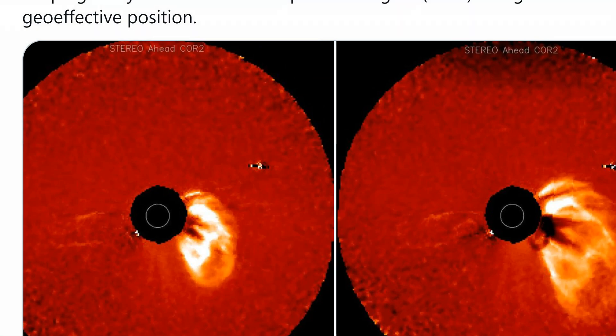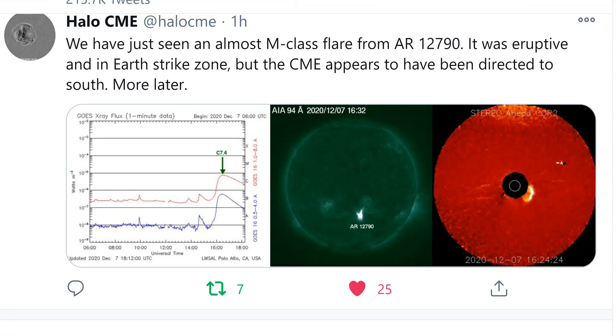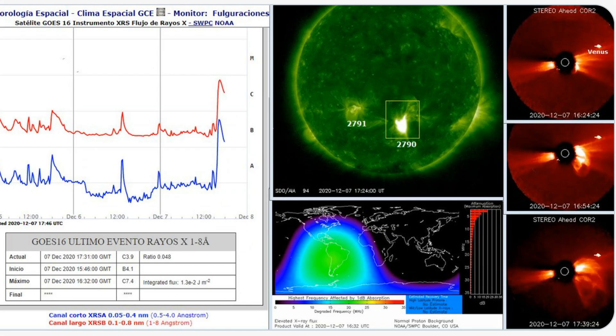Oh yeah, and hey, empires fall during a solar minimum and empires rise during a solar maximum, so the idea of wish-casting a grand solar minimum was always weird to me because I want better times for all of us. We have just seen an almost M-class flare. It was eruptive and in the Earth strike zone, but the CME appears to have been directed a little south. We'll have to stay tuned.